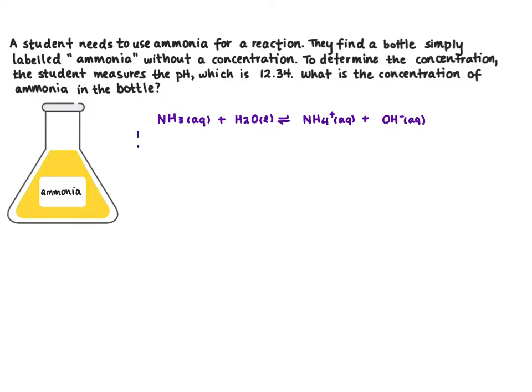So we can write ICE down the side here. We're going to be solving for our initial concentration so I'm going to put an x for the initial concentration of ammonia. Water won't have a change in concentration and our initial concentration of our products is zero.